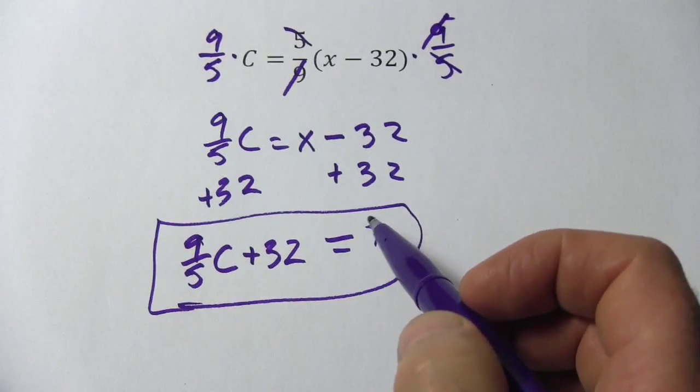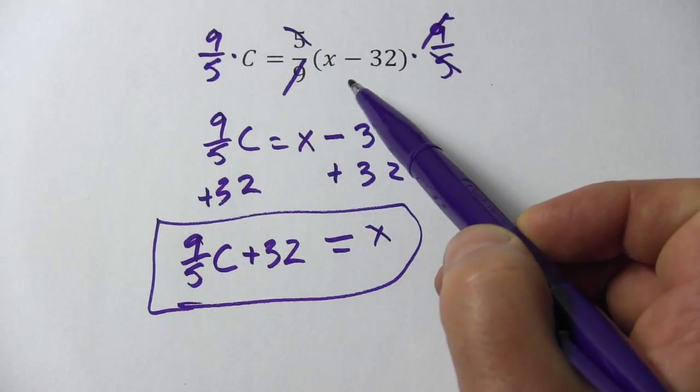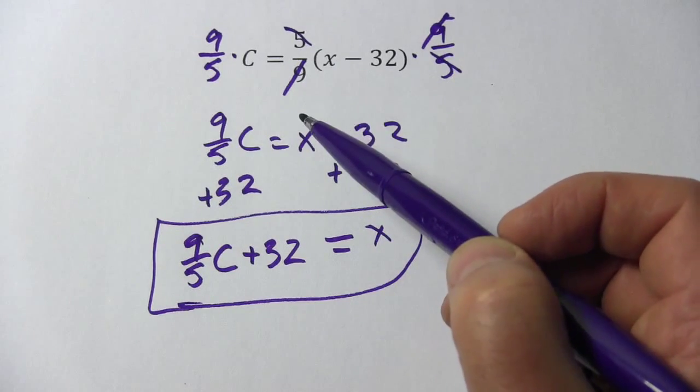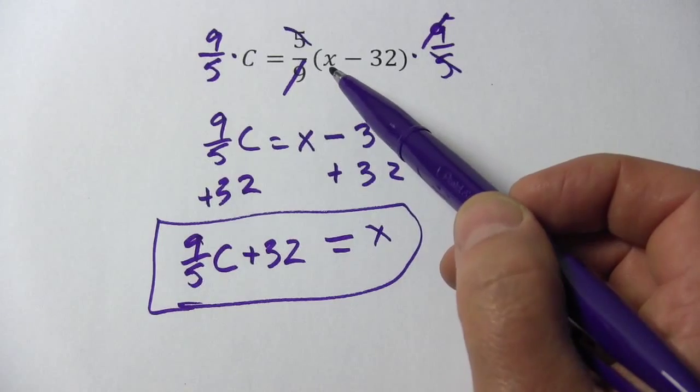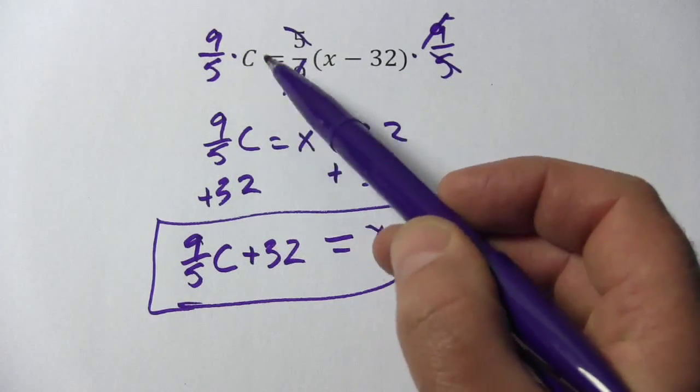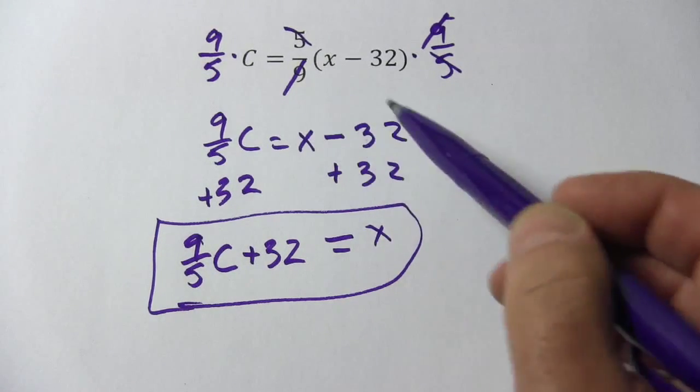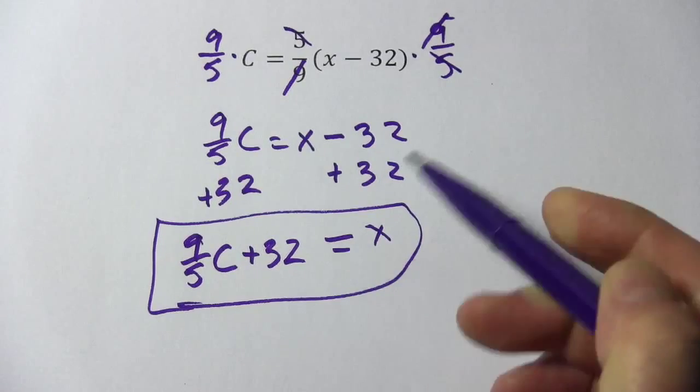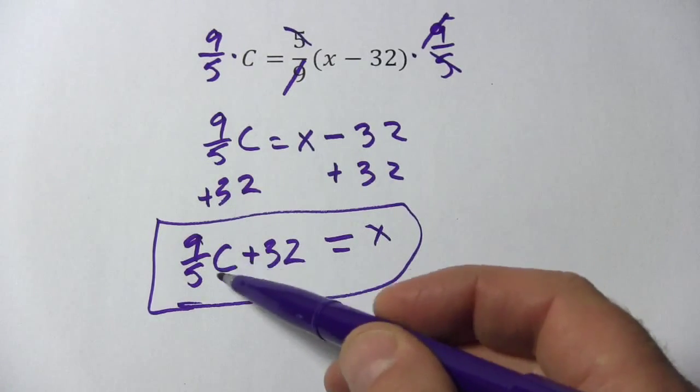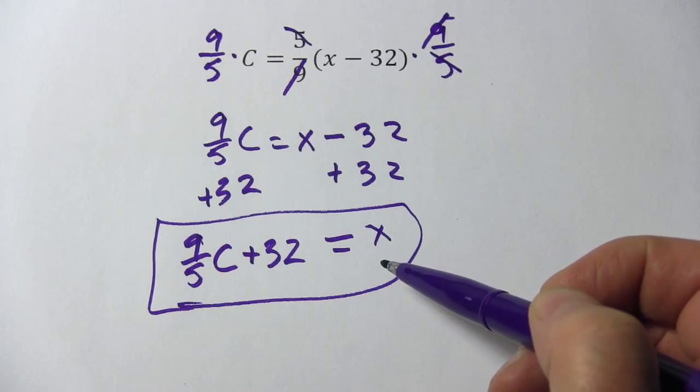You know, this is actually a useful formula, this c equals 5 ninths x minus 32. That's how to convert Fahrenheit into Celsius. If you put in a number for x that's a temperature Fahrenheit, then c is what you get out in Celsius. And when you solve for x, you actually convert this to a formula where you put in a number for Celsius and you'd find out what the temperature in Fahrenheit is.